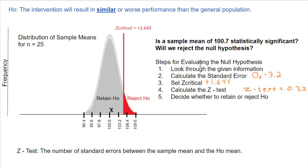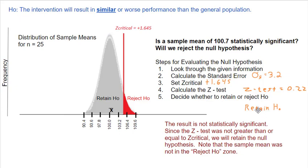Here's our list again for evaluating the null hypothesis. Step one: given information. Step two: standard error = 3.2. Step three: Z critical = positive 1.645 for a one-tailed test. Step four: Z test = 0.22. Step five: we're retaining the null hypothesis — the result is not statistically significant. Since the Z test of 0.22 was not greater than or equal to the Z critical of 1.645, we retain the null. The sample mean was not far enough from where the null hypothesis says it should be to make this result surprising. Our sample mean needed to be at least 1.645 standard errors away to reject the null.